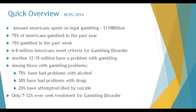Americans spent $119 billion in 2014 on legalized gambling — a number that could probably be doubled if we consider illegal gambling. 75% of Americans gambled in the past year; 15% gambled in the past week. 6-8 million Americans meet criteria for gambling disorder, while another 12 to 15 million have problems with gambling. Among those with gambling problems, 75% have had problems with alcohol, 38% with drugs, and 20% have either attempted or died by suicide. Only 7 to 12% of disordered gamblers ever seek treatment.